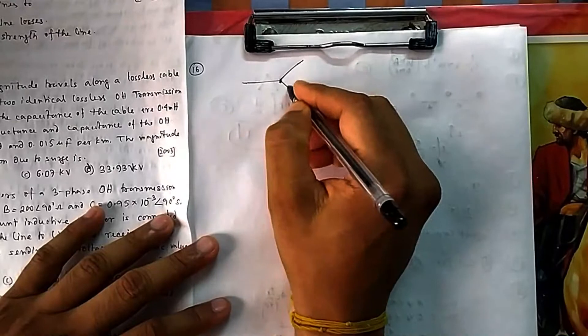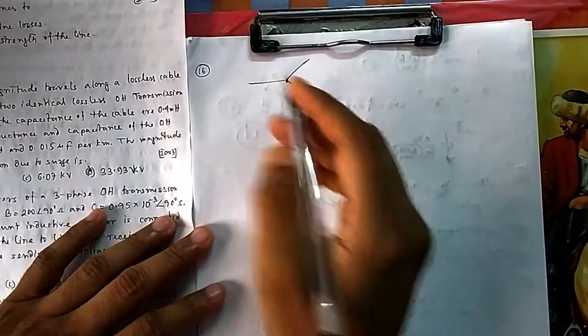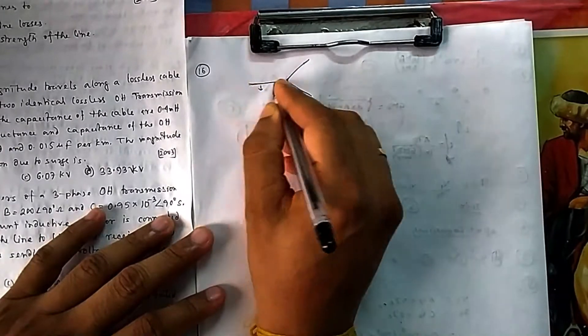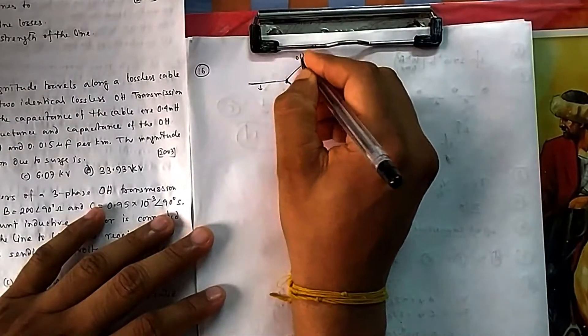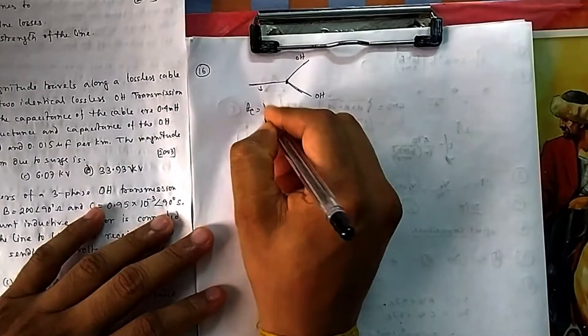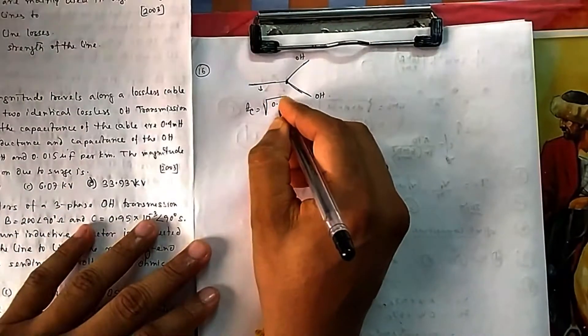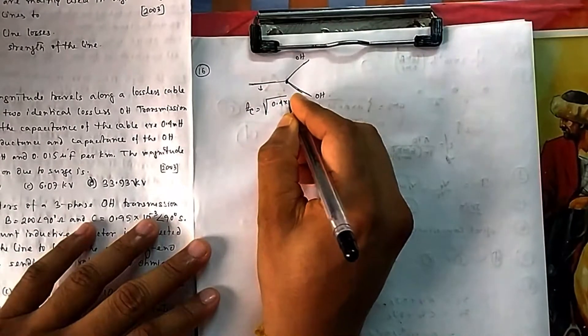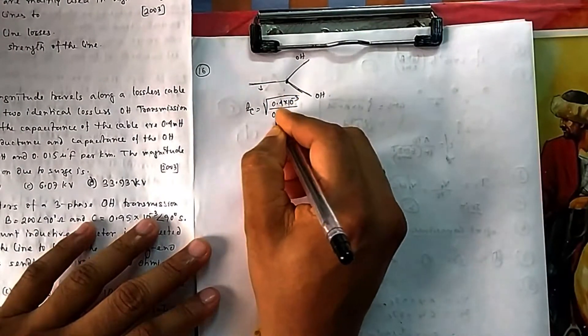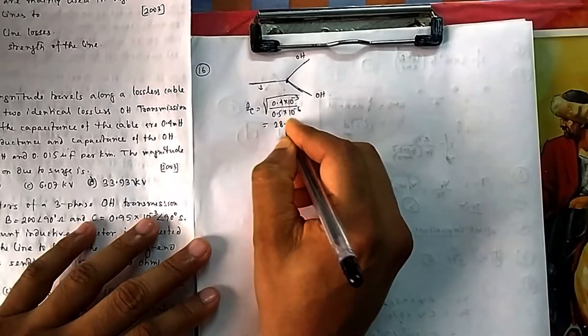The characteristic impedance of these lines is important. You need to use the formula. If you calculate, this is the cable and these two are overhead lines that are identical. What is the characteristic impedance Zc? It is given as Zc = sqrt(L/C). So Zc = sqrt(4 millihenry / 0.5 microfarad). If you calculate this, you will find it is 28.28 ohms.